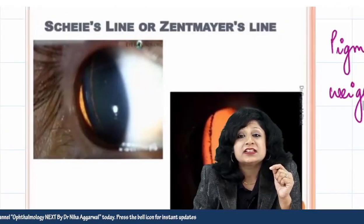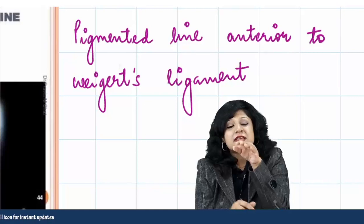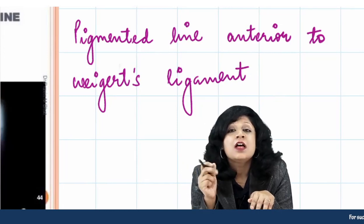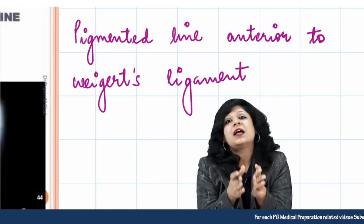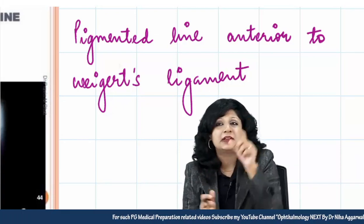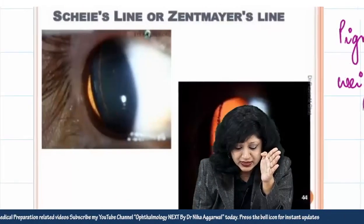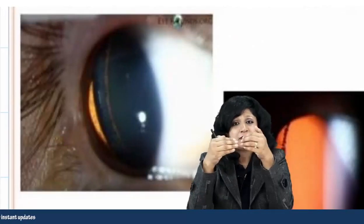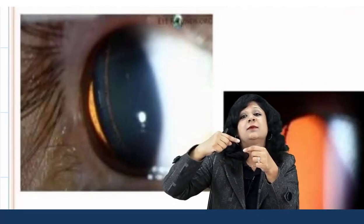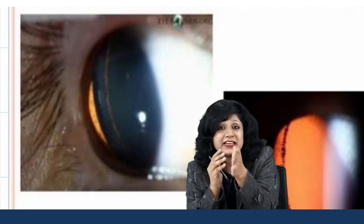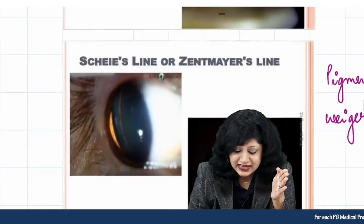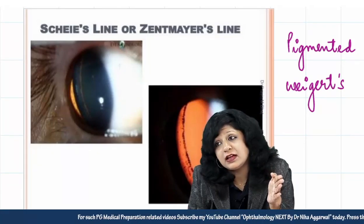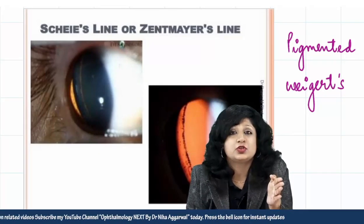Next is the Schies line, also known as Zentmayer's line. This is a pigmented line found just anterior to Wieger's ligament. Wieger's ligament is the hyaloidocapsular ligament — the anterior hyaloid face of the vitreous and the posterior capsule of the lens, with a circular ligament in between called Wieger's ligament. A line just anterior to that ligament is the Schies line, or Zentmayer's line. Though not commonly asked, it is a potential exam question.